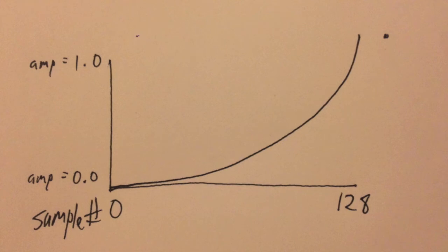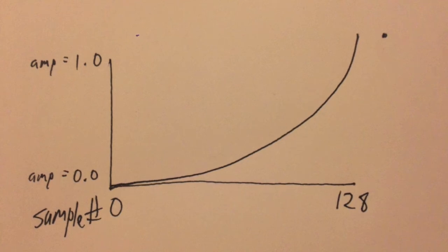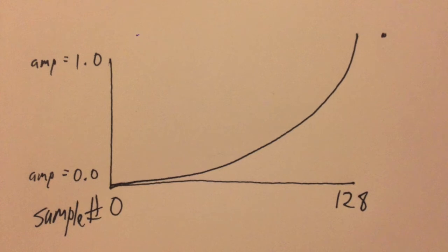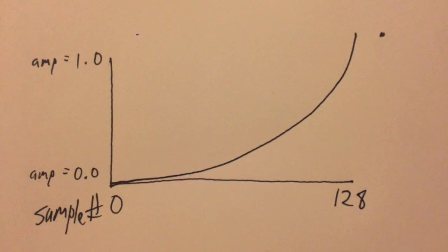Okay, so we've got our lookup table that you're looking at here, where on the left side is sample number zero. On the right side is however big you want the table to be. So in this case, it would be 128 samples. It's kind of a convenient size, the power of two. And you can see that there's an exponential rise from zero to one in this.